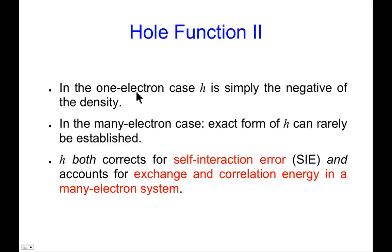So a hole function can be thought of as a property that an electron carries around with it that allows one to compute the correction to a classical charge-charge repulsion in any system. Now, the trouble is that while in the one-electron case we know exactly what h is, it's the negative of the density, in the many-electron case we really don't have any clue of what this kind of complicated hole function should look like. Because it is correcting both for the self-interaction error, so that's the one that's obvious to see with one electron, and of course it will be there with many electrons, but it also accounts for exchange and correlation energy in a many-electron system, and we don't really have any idea how to extract that from a given electron density.